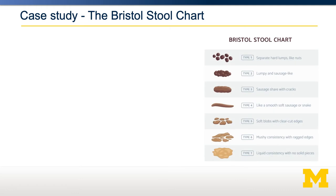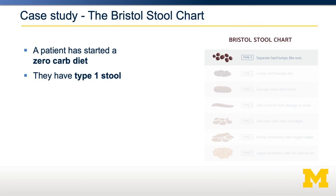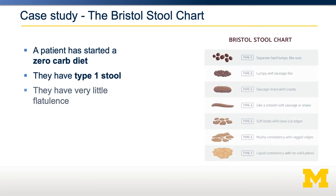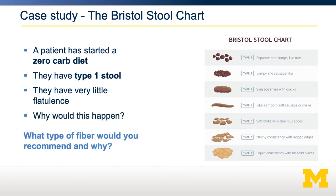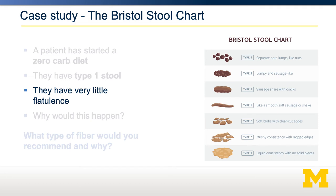Let's go through one example. Shown on the right is the Bristol stool chart, a commonly used diagnostic technique to assess somebody's stool. Most people have type 3 or type 4 stool. Imagine a patient has started a zero-carbohydrate diet — eating no carbohydrates and no fiber — and now reports type 1 stool, which are separate hard lumps, and very little flatulence. They would have very little flatulence because they have very little fermentable fiber. The fermentable fiber serves as a prebiotic for gut bacteria, which produce gases resulting in flatulence. In this case, you might recommend a soluble fermentable fiber, and also some insoluble fiber to provide more bulk to the stool.